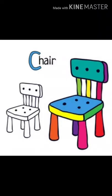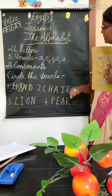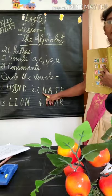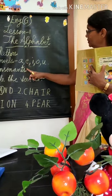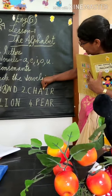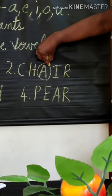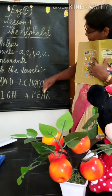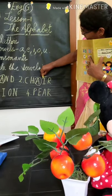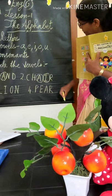Second one is CHAIR. C is a consonant. H is a consonant. A is a vowel — circle A. I is also a vowel — circle I.